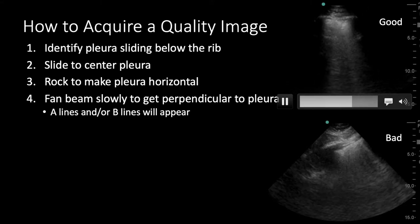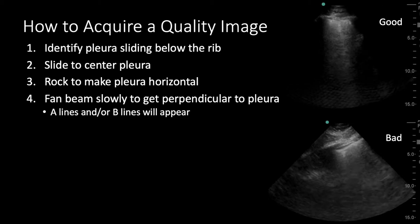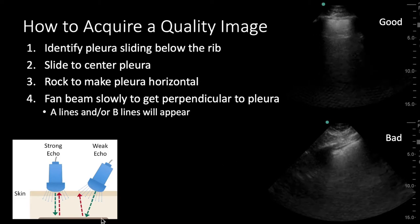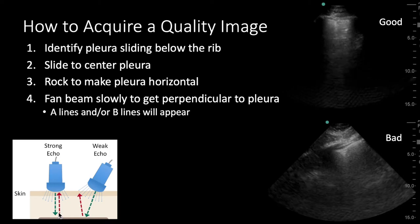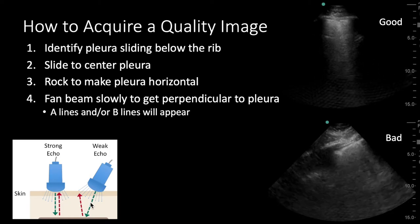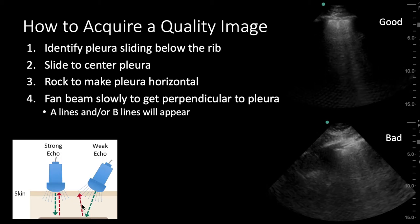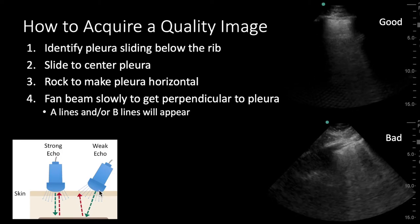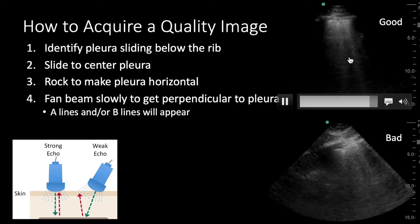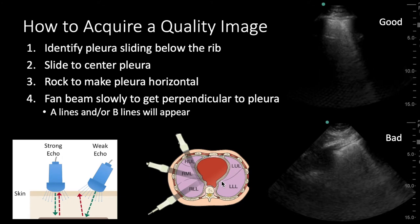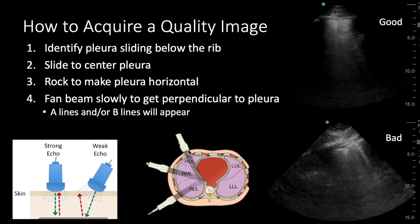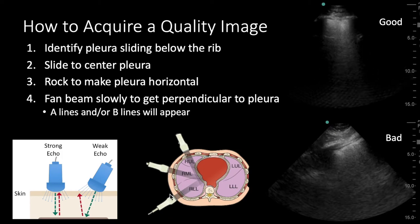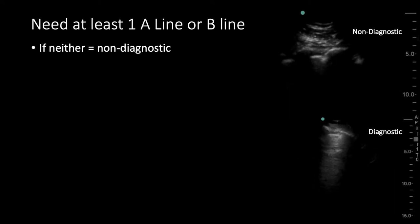Once you have the pleura centered and horizontal, you can start to fan the beam to the patient's right or left in order to get your ultrasound beam perpendicular to the chest wall — that's essential for your A-line and B-line exam. From physics: if you send an ultrasound wave perpendicular to the pleura, you maximize the echoes bouncing back. If the ultrasound is at an angle, waves pop off at 90 degrees and fewer return to the probe, so you have fewer echo reverberations. You've got to get your probe perpendicular to the pleura to bring out A-lines and B-lines.